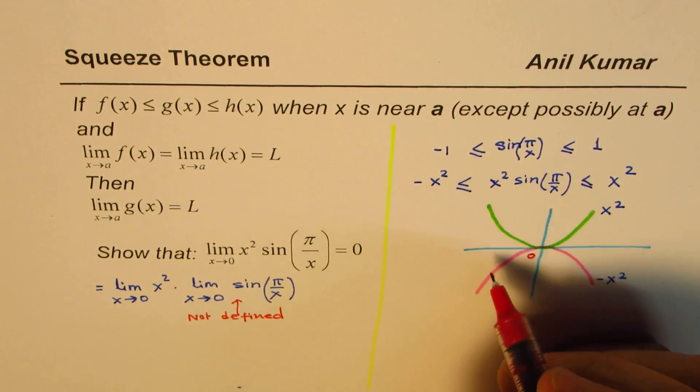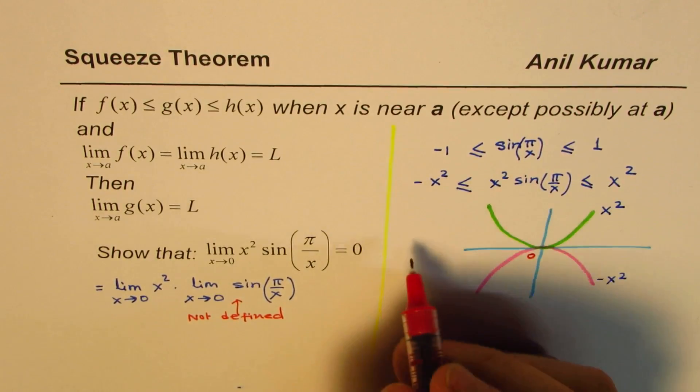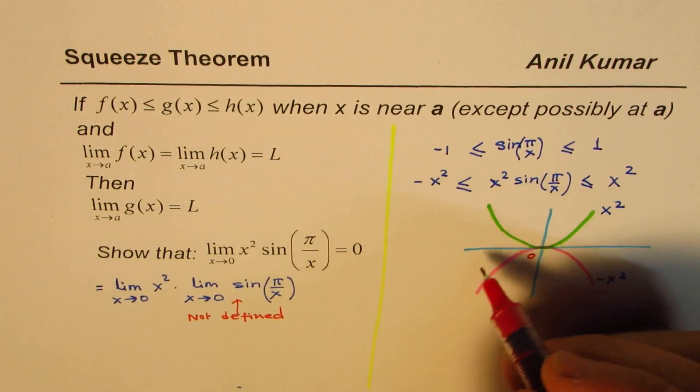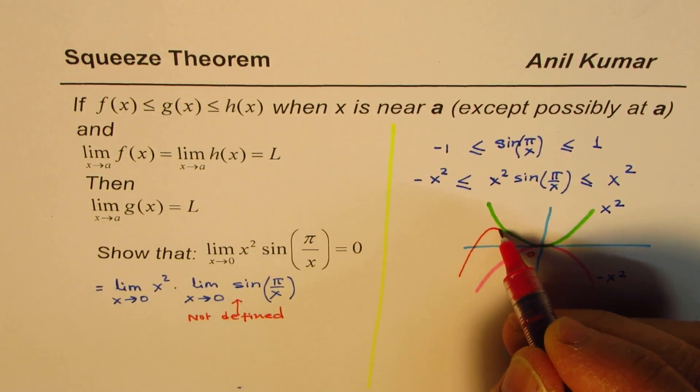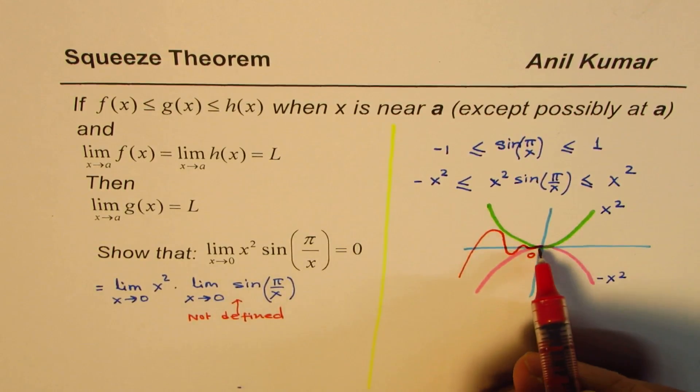Now, see what happens as we approach 0. The value of sine function times x². If you are thinking about x² times sine function, it could be something like this coming in between these two.